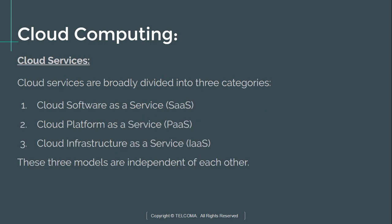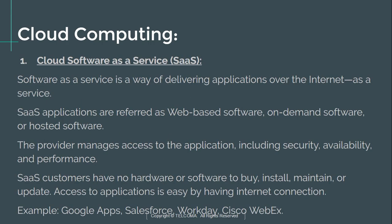Cloud services are broadly divided into three categories: Cloud Software as a Service (SaaS), Cloud Platform as a Service (PaaS), and Cloud Infrastructure as a Service (IaaS). These models are independent of each other. Software as a Service is a way of delivering applications over the internet as a service — cloud computing companies provide software directly to users as a service.